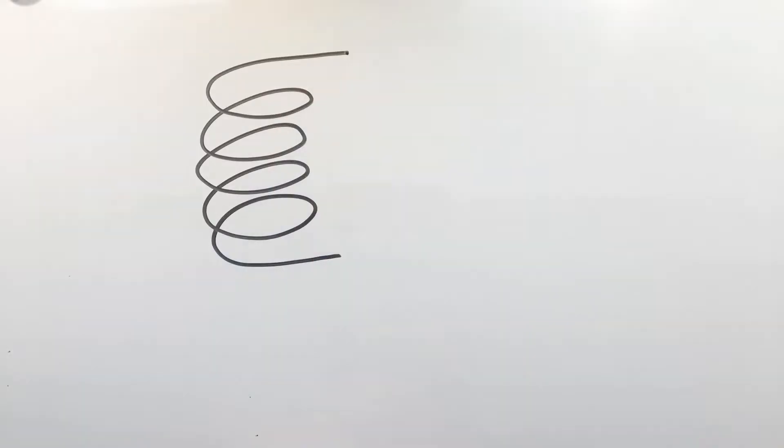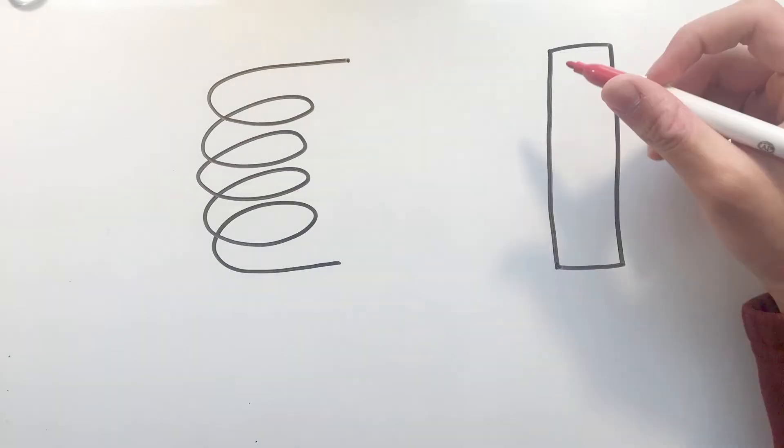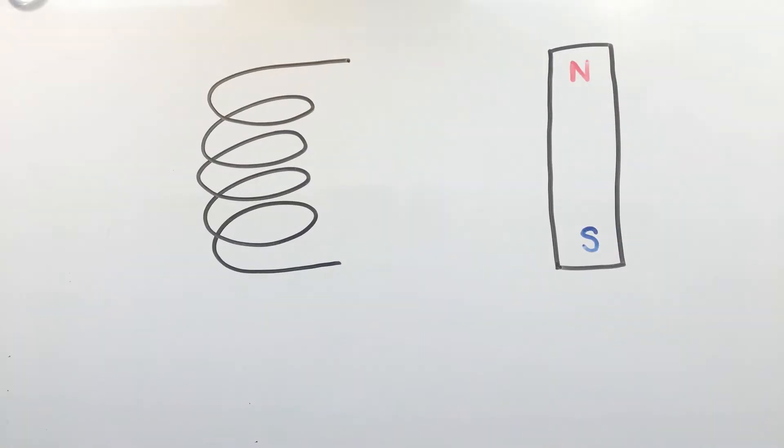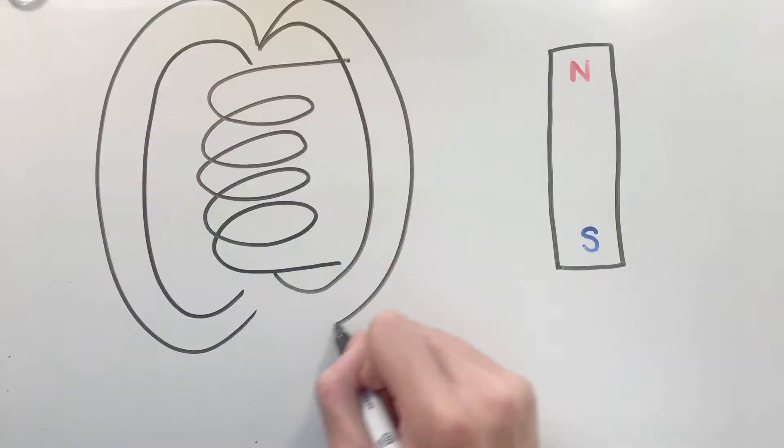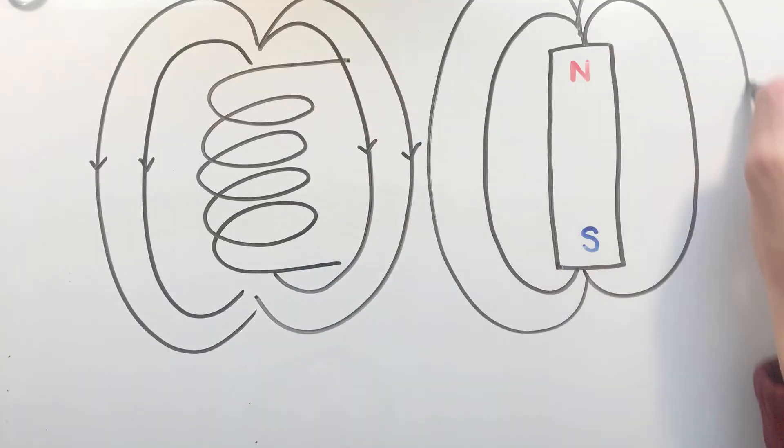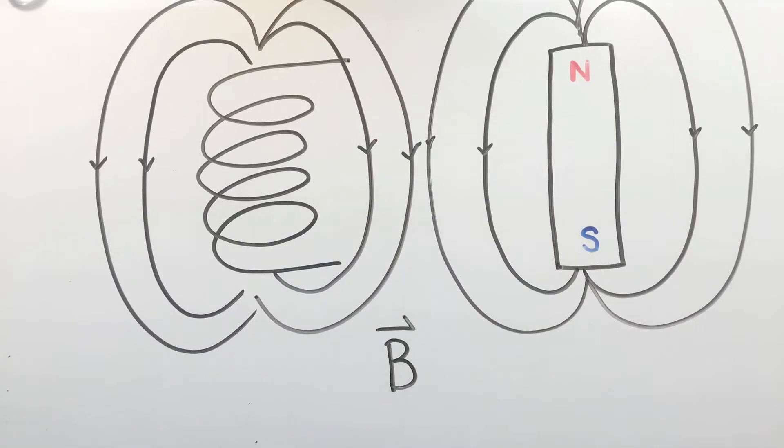While there are many ways to create a magnetic field, such as through a permanent or electromagnet, the fundamental idea is that magnetic fields, like electric fields, can apply forces on certain objects. The magnetic field is usually denoted by the vector B and is measured in a unit called Teslas.